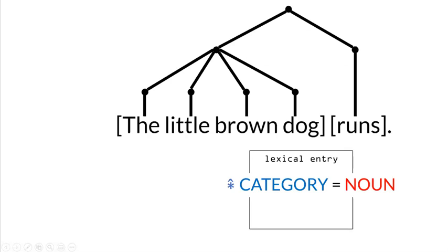In the last videos we began creating a descriptive equation in the lexical entry of a noun to model how information about its lexical category is shared throughout the syntactic structure. We need one more important concept to finalize this equation. A node in C-structure is not the kind of object that can contain any information — it just marks a particular position in the structure. In order to create a space where information can be represented, we are going to introduce a new structure linked to this node.